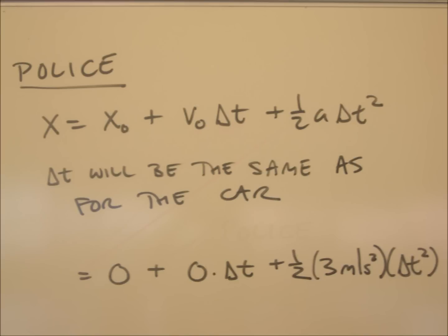We can sub into this equation, so we have x for the cop equal to zero, the initial position for the cop, plus zero times Δt because the cop is stationary at the beginning, plus ½ times the cop's acceleration, 3 meters per second squared, times Δt squared.